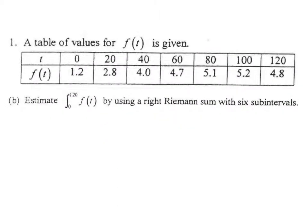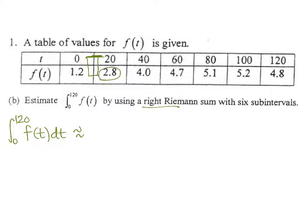Now, just like the previous problem where we had a left Riemann sum, we're going to do a right Riemann sum. We still set up the same way — integrating from 0 to 120 — and we are still doing width times length (height), but now we're doing a right Riemann sum, so the length comes from the rightmost side of each interval.